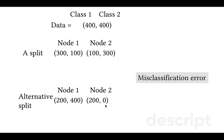So if we calculate misclassification error, we will get that in node 1 and node 2 our misclassification error will be 0.25. So a quarter of observations are misclassified. When we look at the alternative split, 33% will be misclassified in node 1 but 0 will be misclassified in node 2.